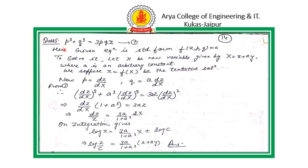Another example for standard form second: the given equation is in standard form second — it contains only the terms of P, Q, and Z. Let Z equals a function of capital X, where capital X equals X plus AY. Substituting P equals dZ/dX and Q equals A·dZ/dX, and after solving, we find the value of dZ/dX. We apply the variable separation method, taking the terms of Z on the left-hand side and the terms of X on the right-hand side. On integration and after substituting the value of X, we get the required solution.